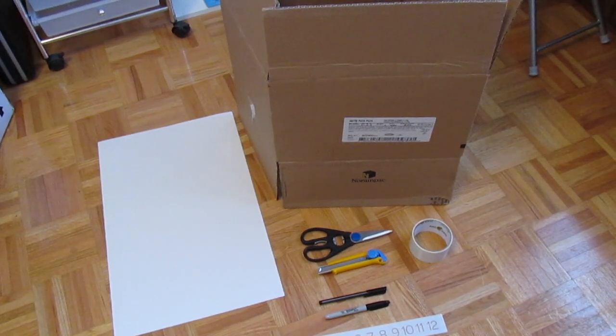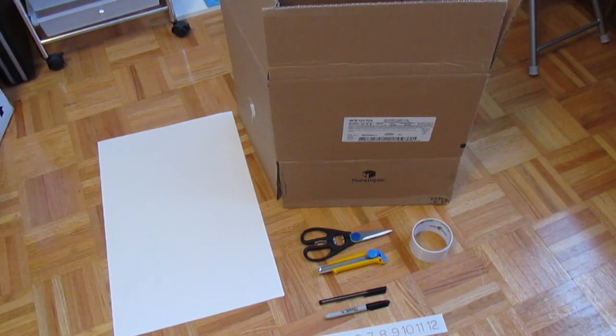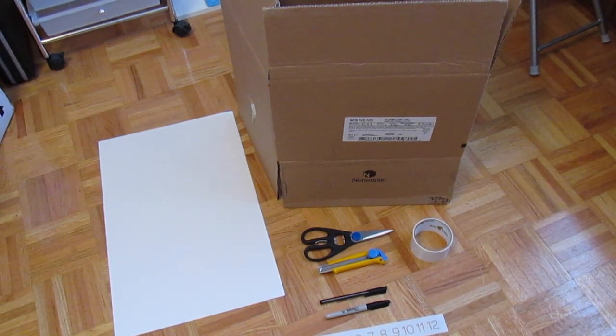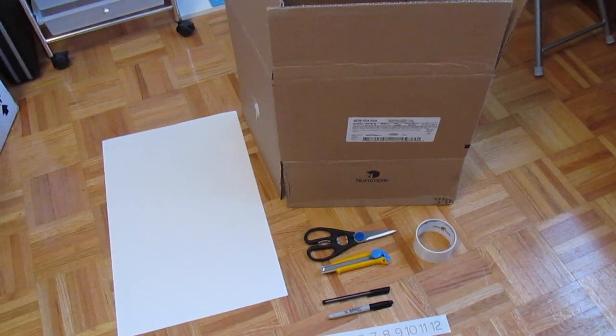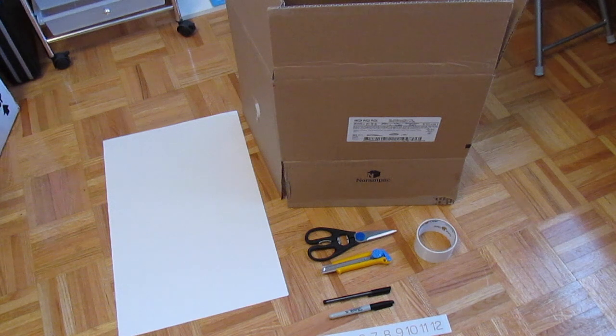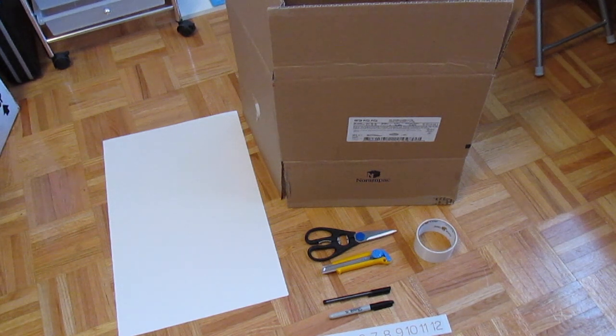So here are the things that you need to build your own photography light box. You need a box, basically you can use a rectangle one but preferably a square one that's really deep. You need a sheet of white Bristol board. I got a half one here rather than buying a whole one because it fits my box perfectly.